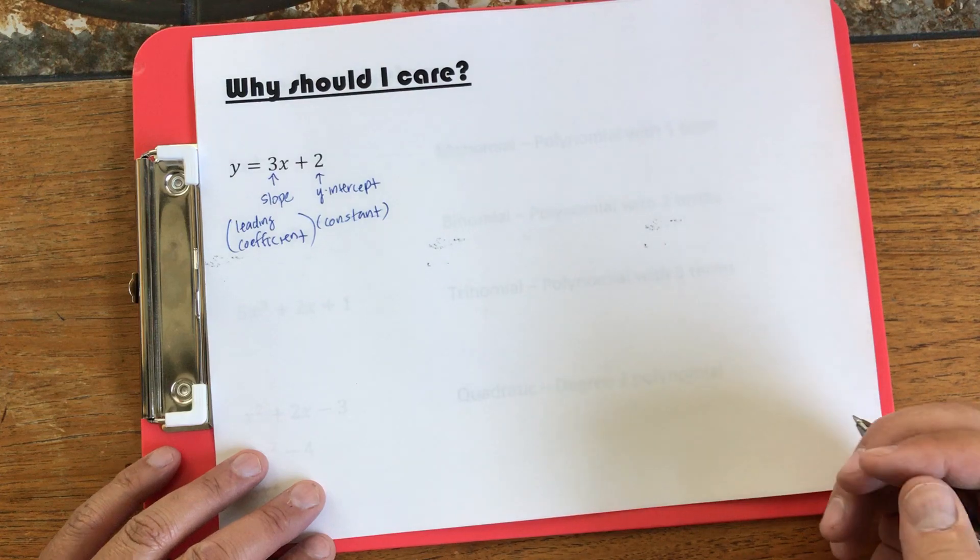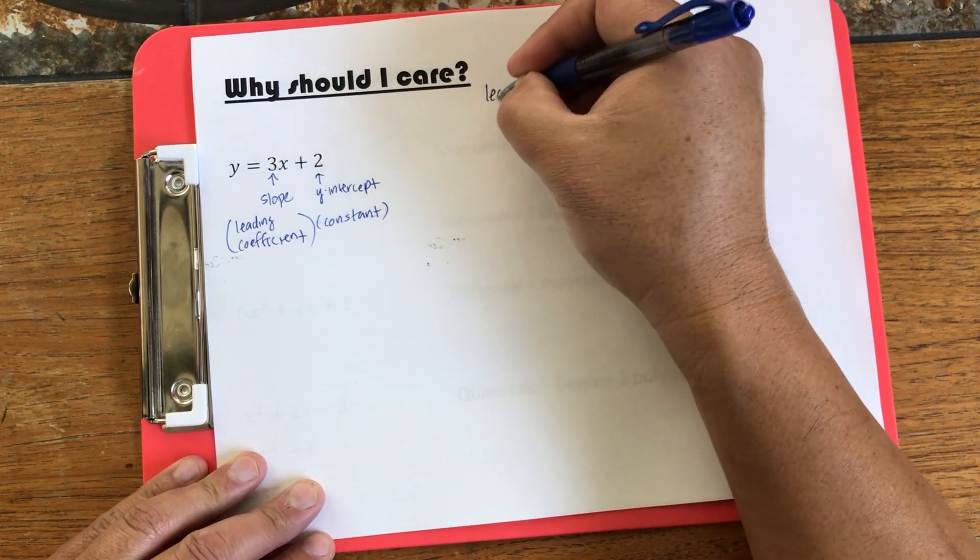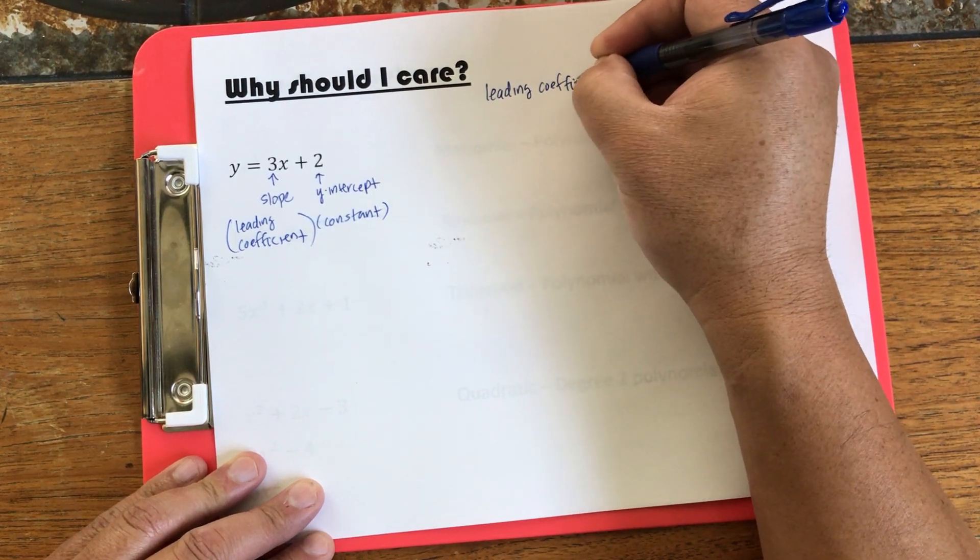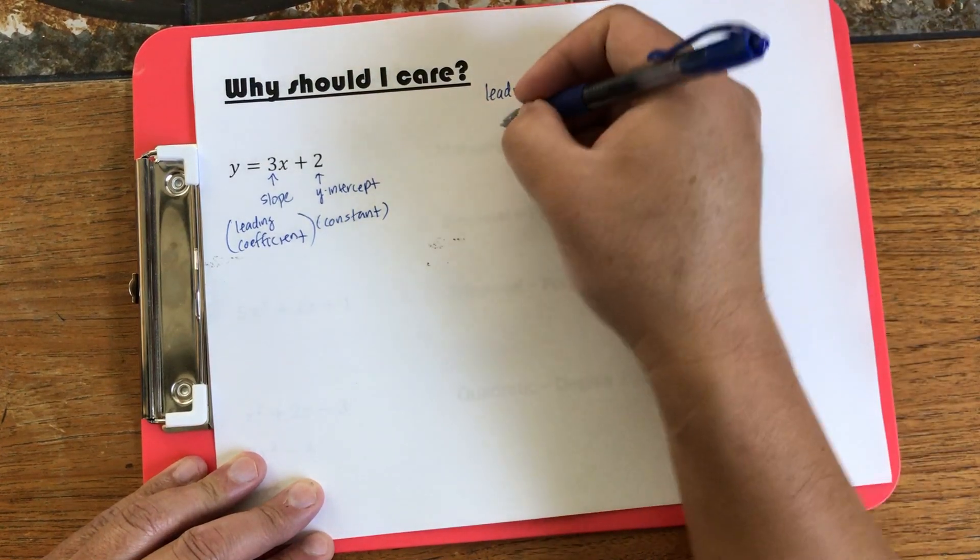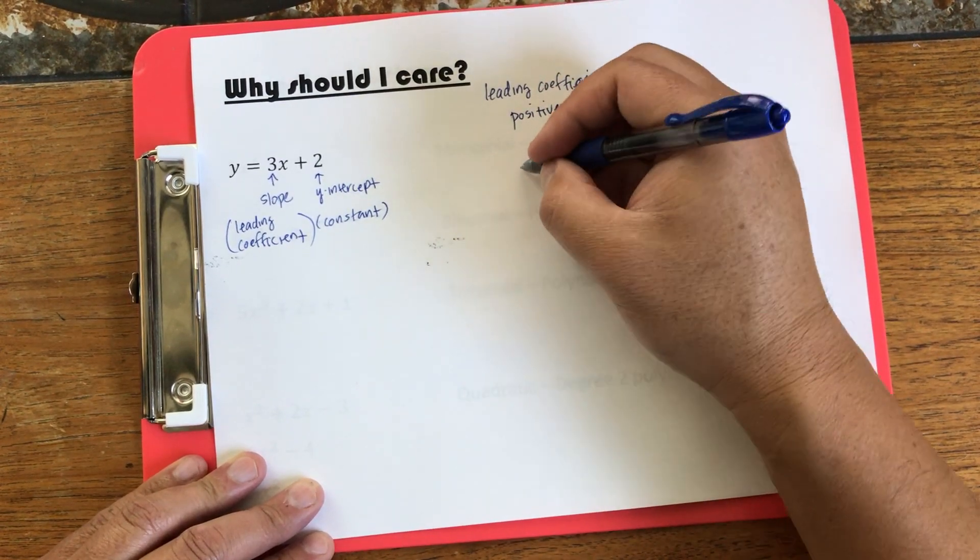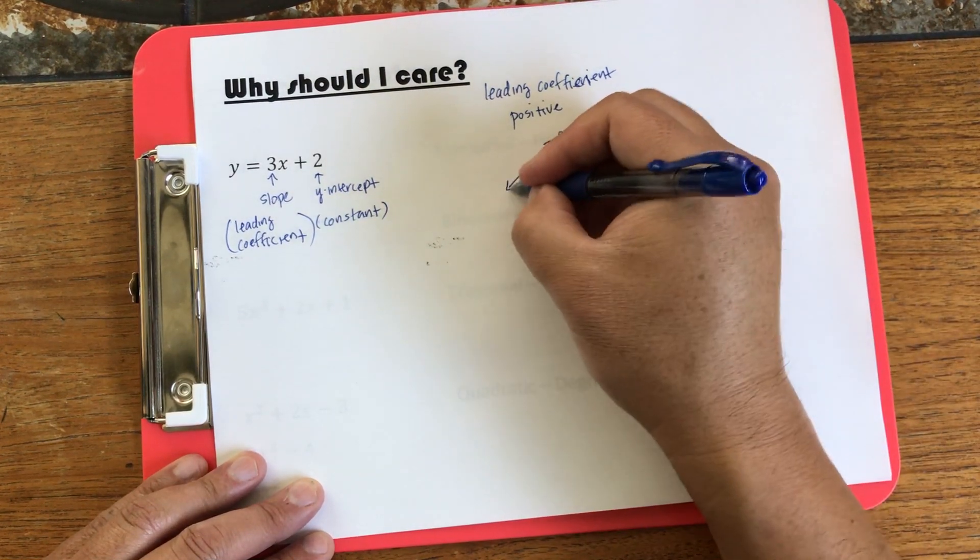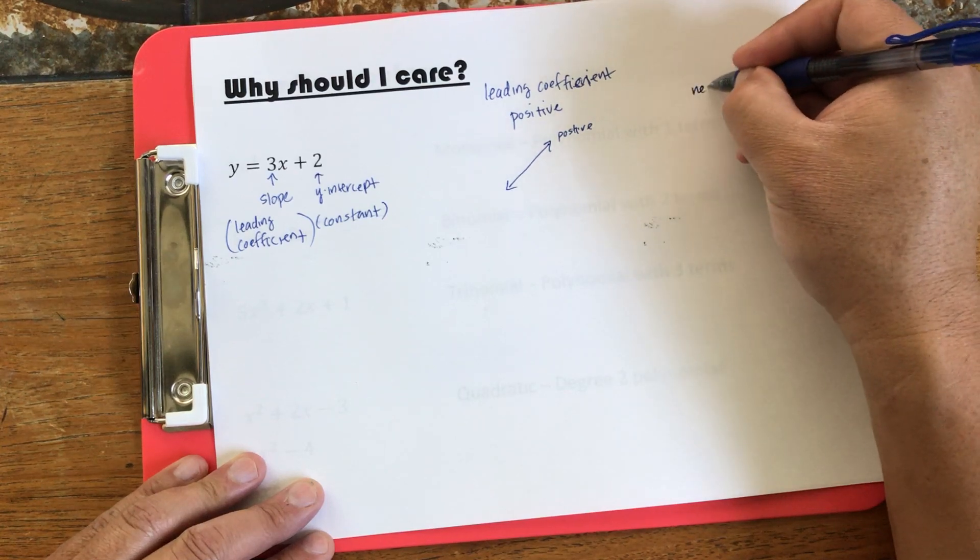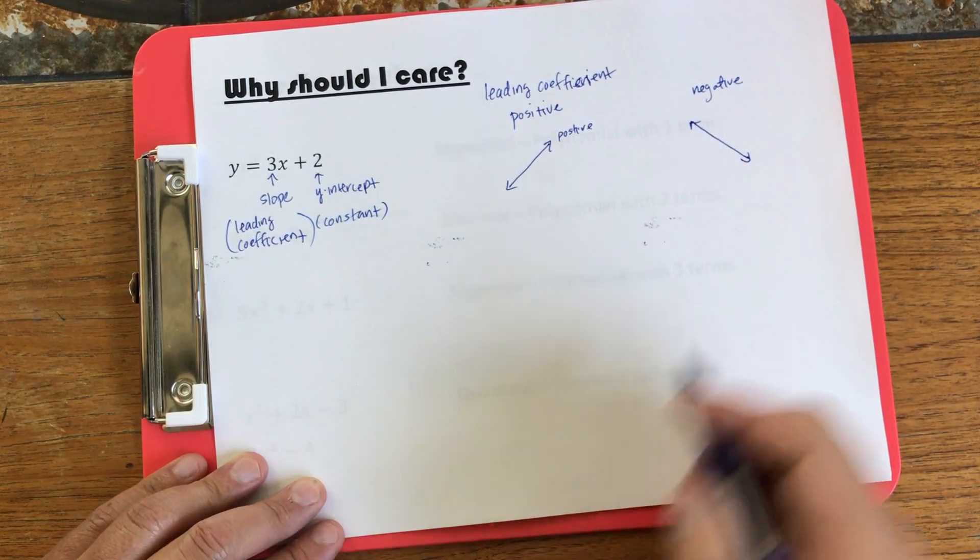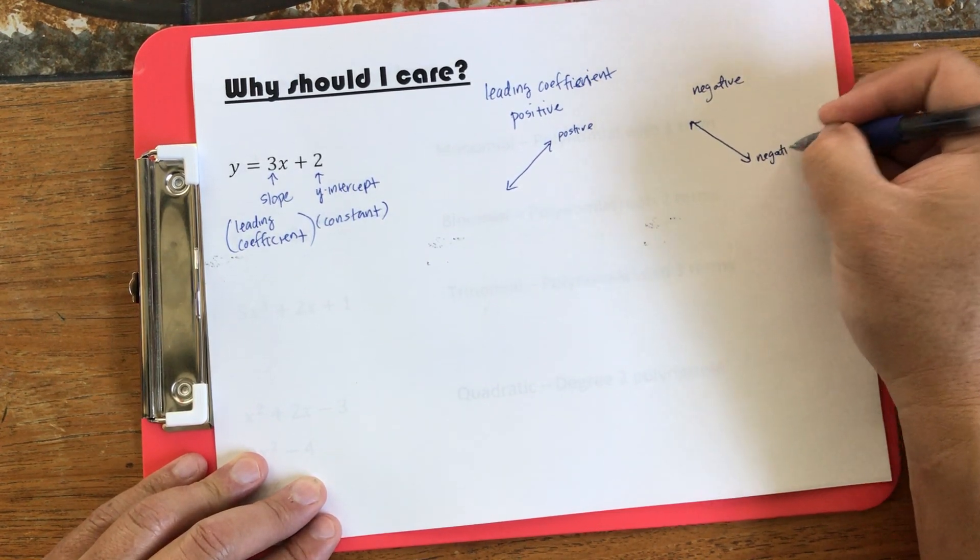Now, why is this important? If we were to graph this, we know that when slope is positive, so the leading coefficient is positive, right, we know that the line goes up towards positive y-direction. We know that if the leading coefficient is negative, it goes down, right? If my slope is negative, my line goes down in the negative y-direction.